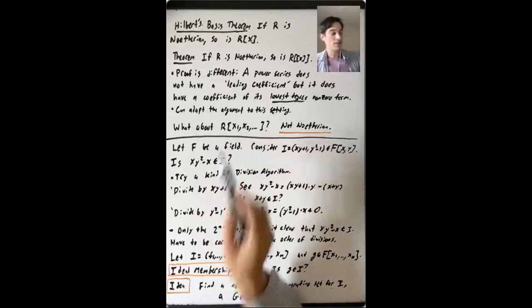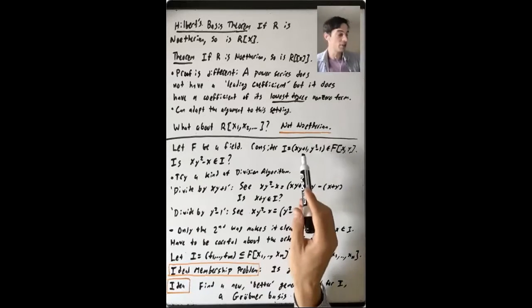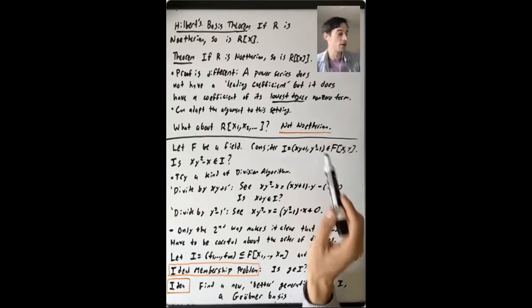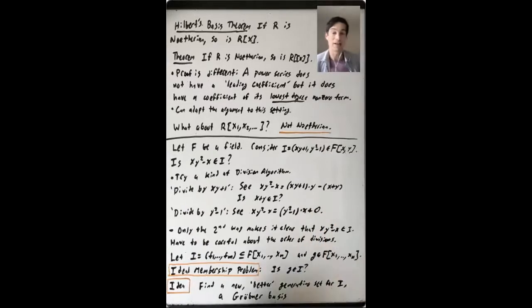So let's say that F is a field. And let's take the ideal generated by, let's say, X, Y plus one, and Y squared minus one. That's an ideal in F bracket X, Y.